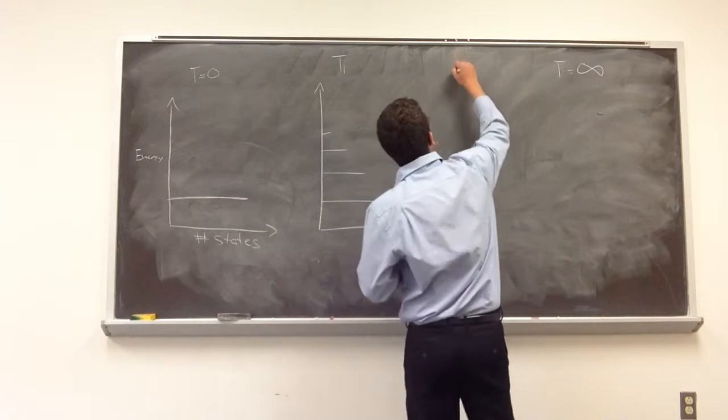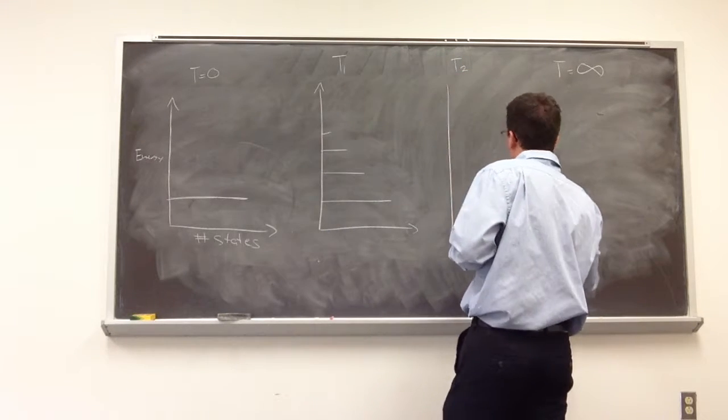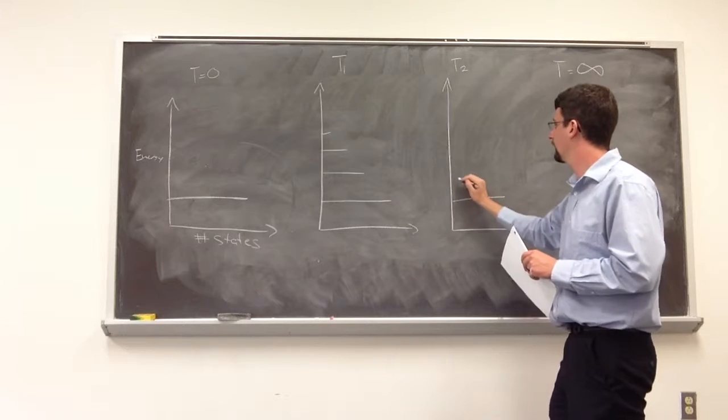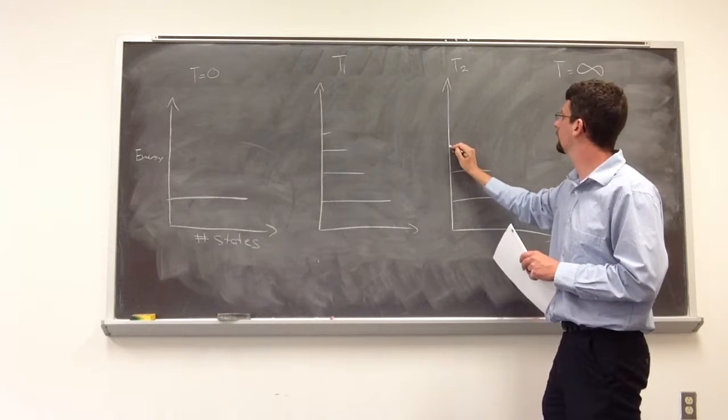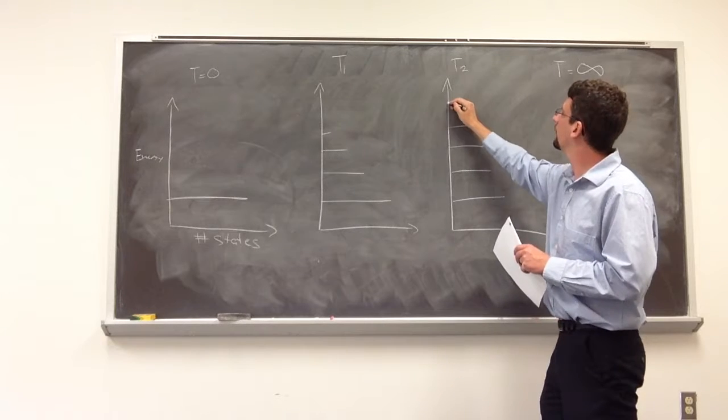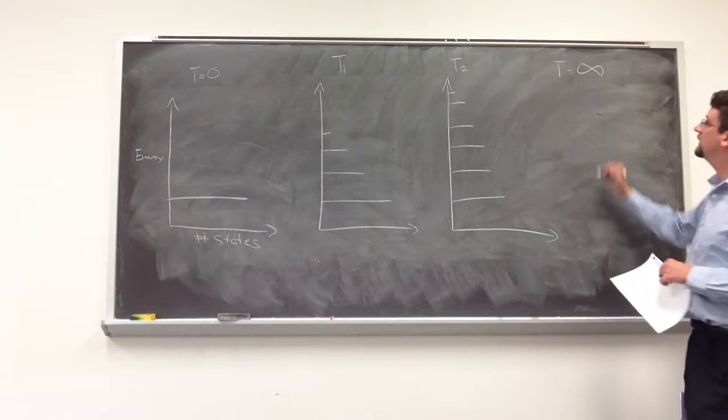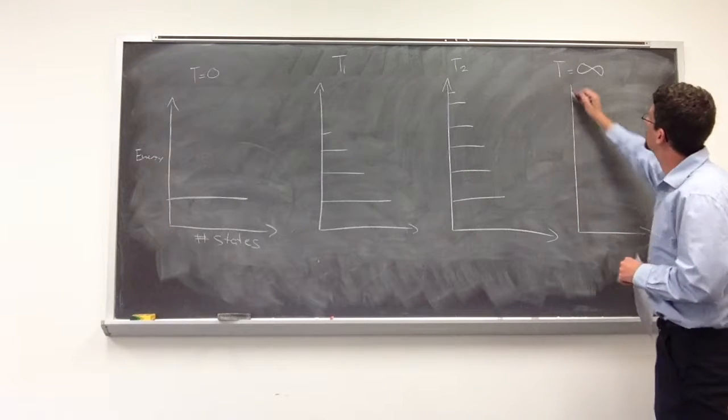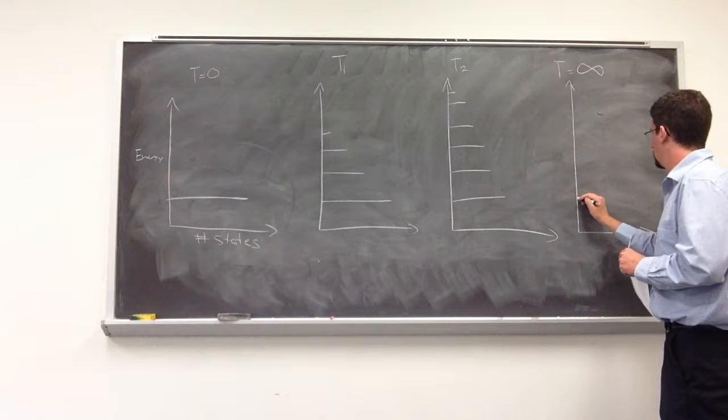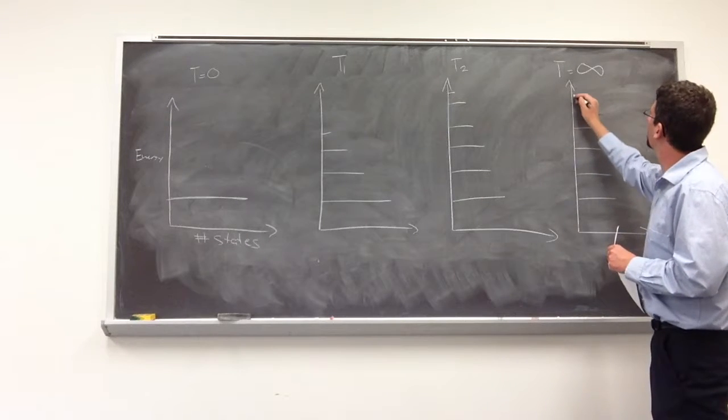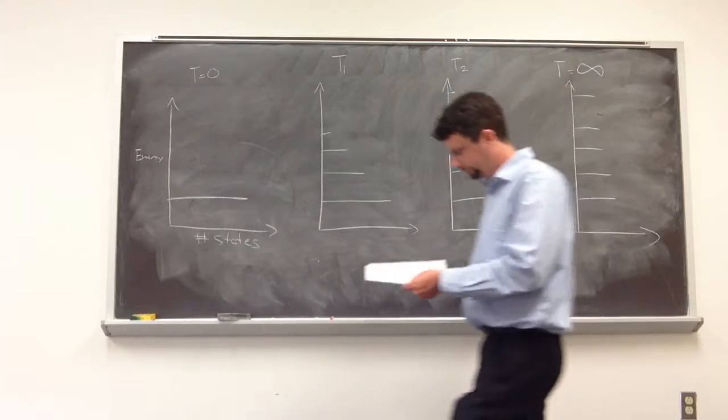As we go to a bit higher of a temperature, again, we're going to be able to access more states. And then eventually, as we go to a t infinity, the probability of being in any of these states should be equivalent.